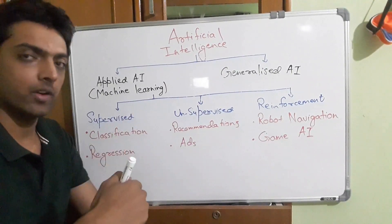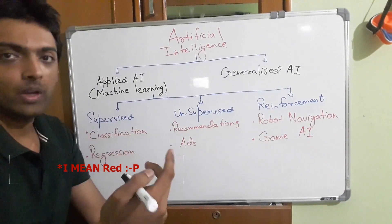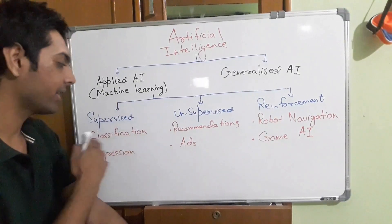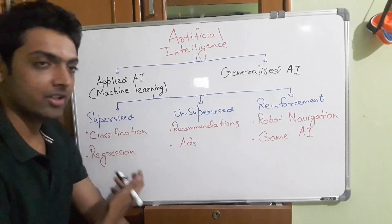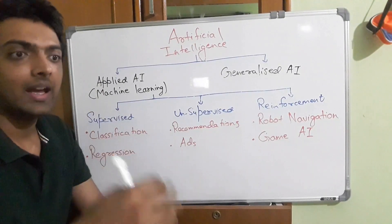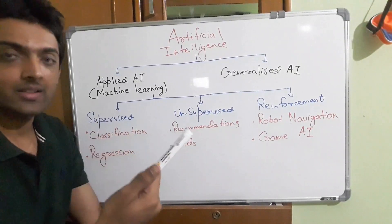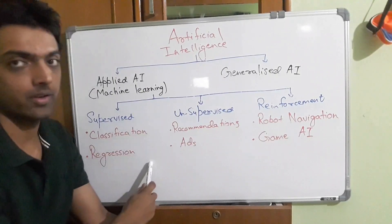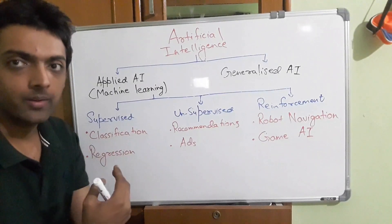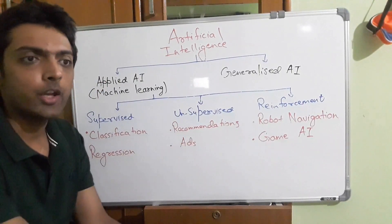There are two kinds of tasks you can do in supervised learning. First is classification — for example, classifying images of objects. Second is regression — for example, the stock market, where input and output are given and there is a trend the model learns to forecast. So supervised learning is where you give input, you give output, and you expect a pattern to come out for further use.